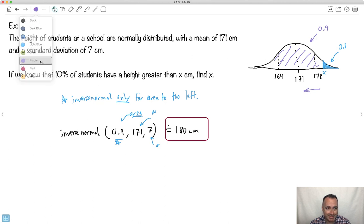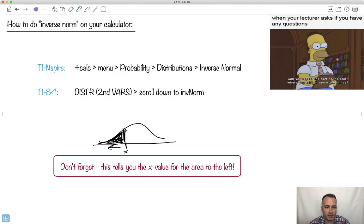But I think it's a safe idea to just always use the fact that inverse normal only uses areas to the left, which means if you're given an area to the right, then you have to think about what's the area to the left. So if this was 0.1, that became 0.9 and so on. If this was 0.6, then this would be 0.4. Now, if we're given an area that's to the left, it would be no problem. We can just put in the value. It's only the area to the left.